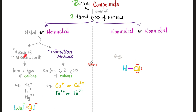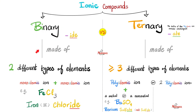Alkali or alkaline earth metals can only give you one type of cation — sodium can only give sodium +1. Transition metals are different; iron can give 2+ or 3+, copper can give 1+ or 2+. This is a binary ionic compound made of two types of elements: iron and chlorine. You call it iron chloride, and to distinguish Fe2+ from Fe3+, you write a Roman numeral.